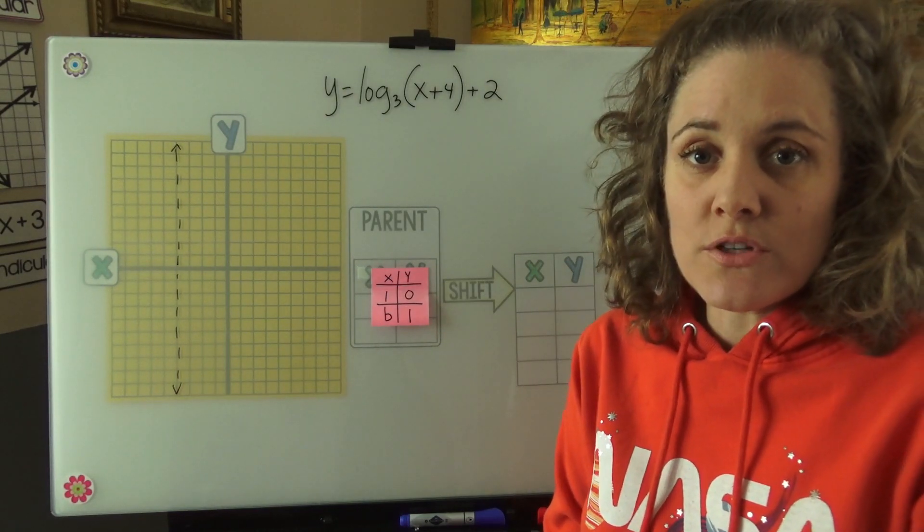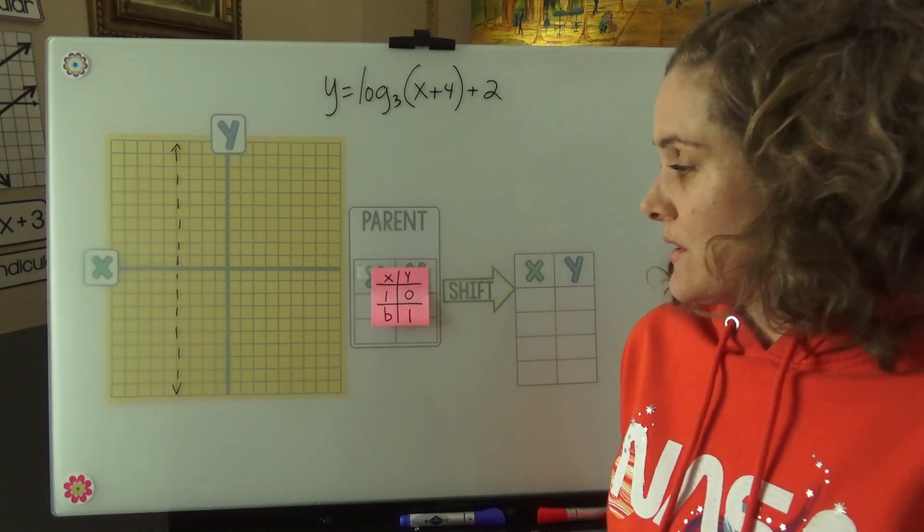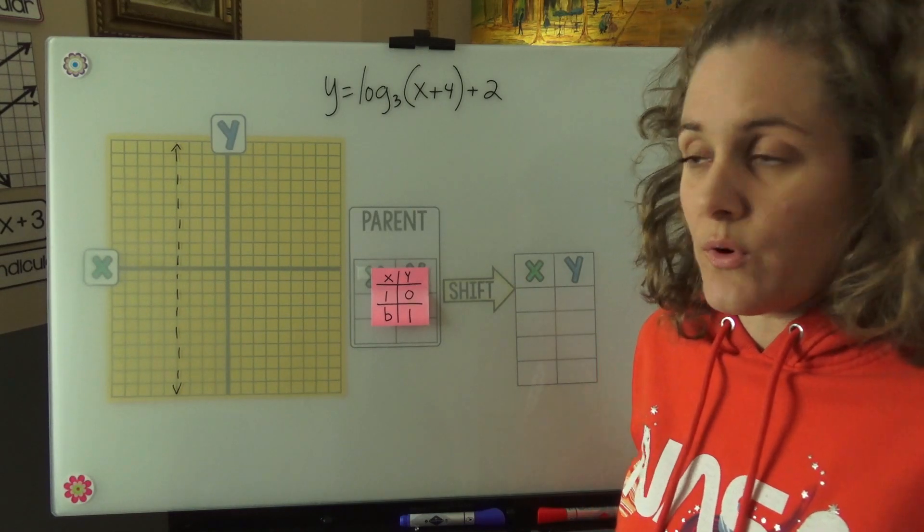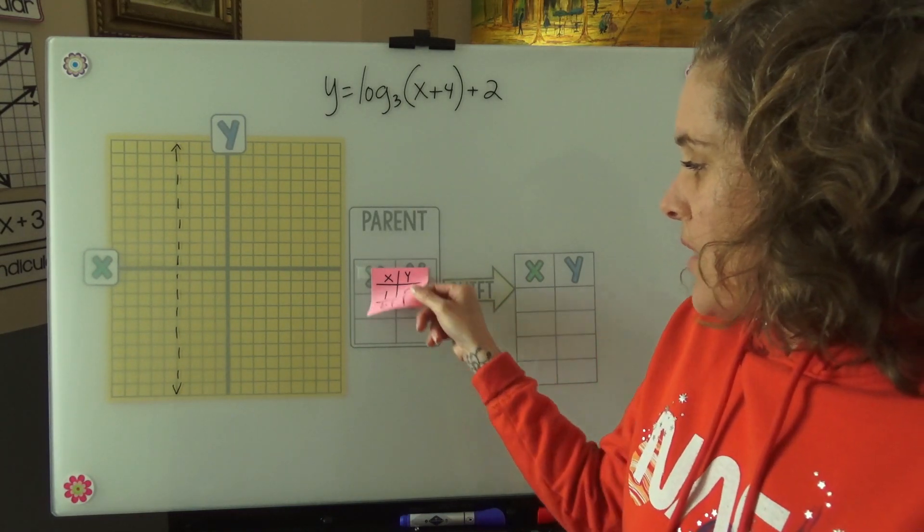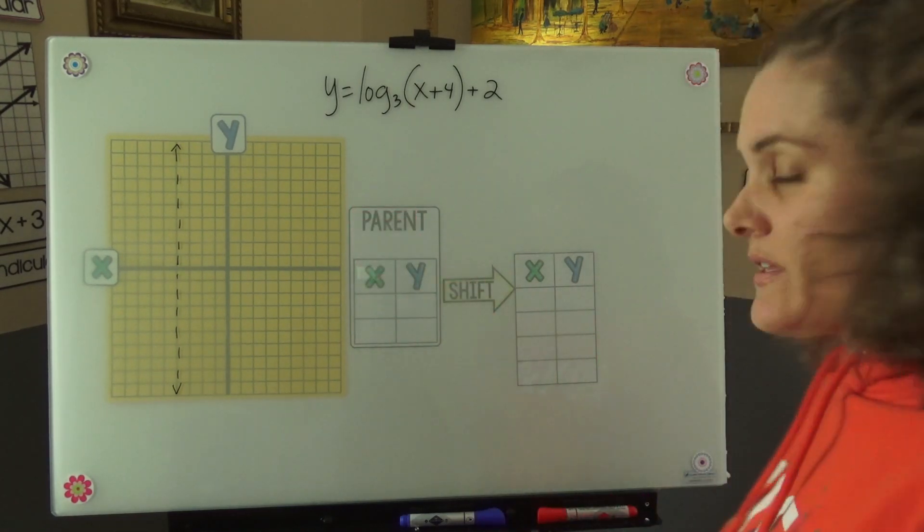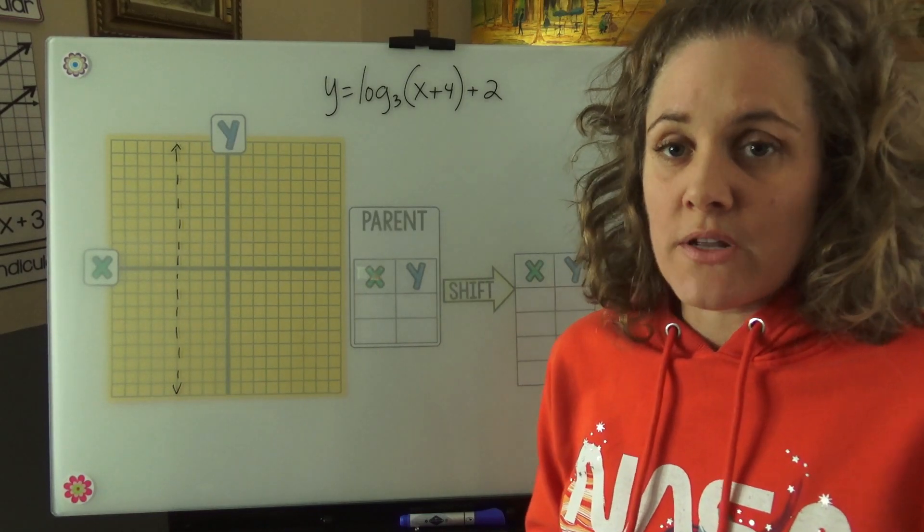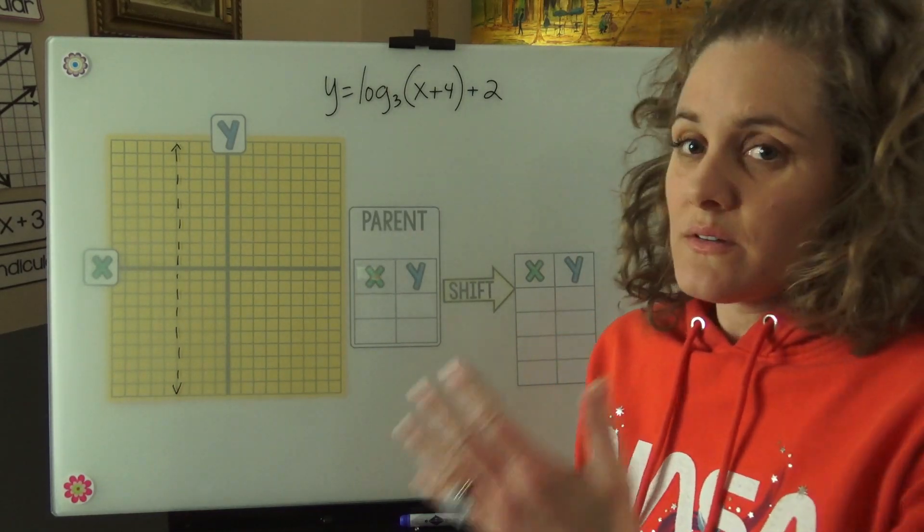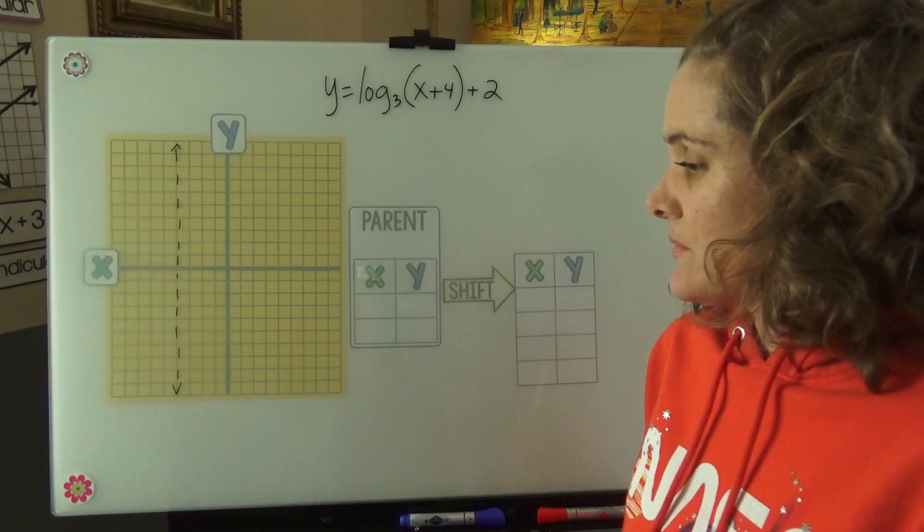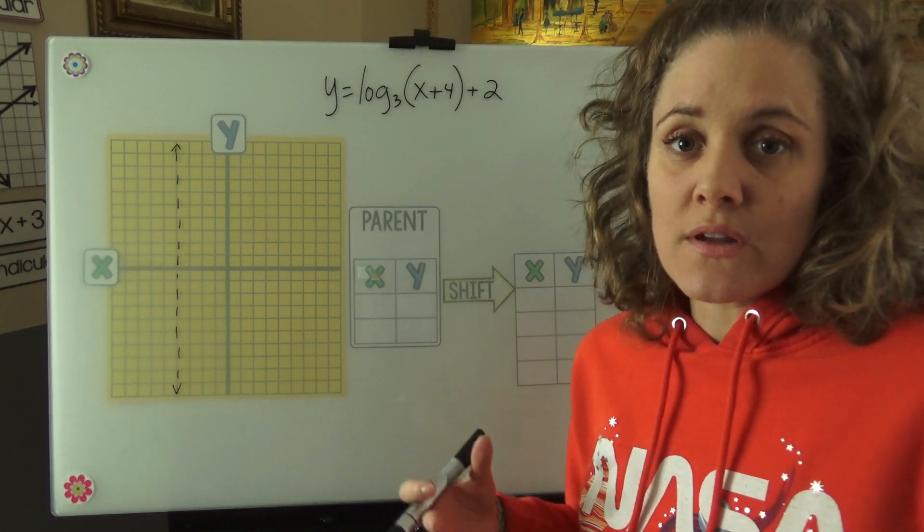The next thing we want to do is create a parent table. There are always 1, 0, and then b, 1 for our two coordinates. And you know why that is, we kind of want to remember that these are inverse exponentials so we can think of them as backwards exponentials.